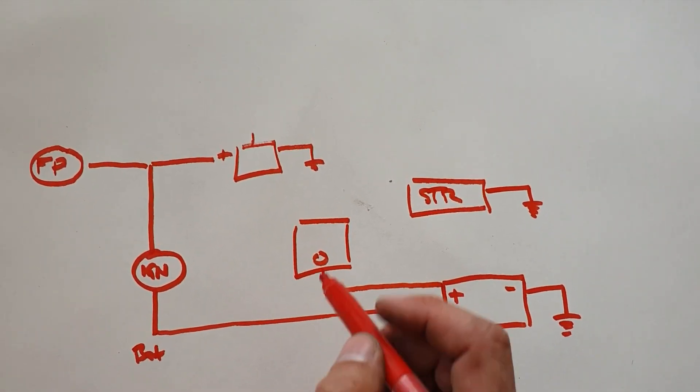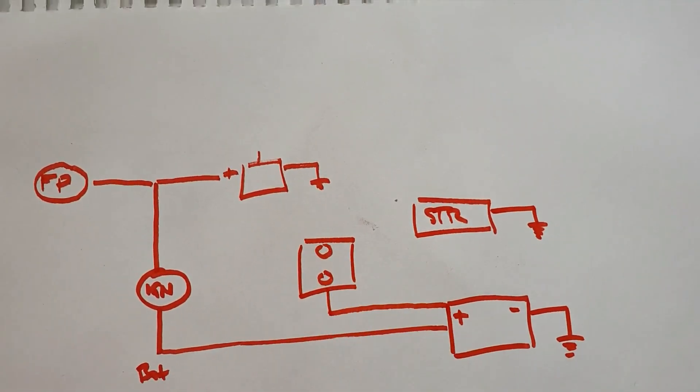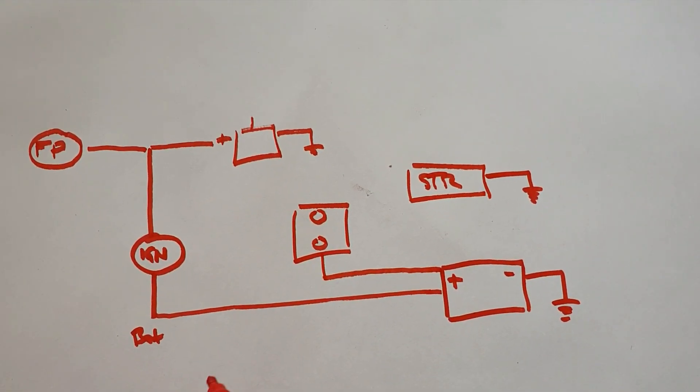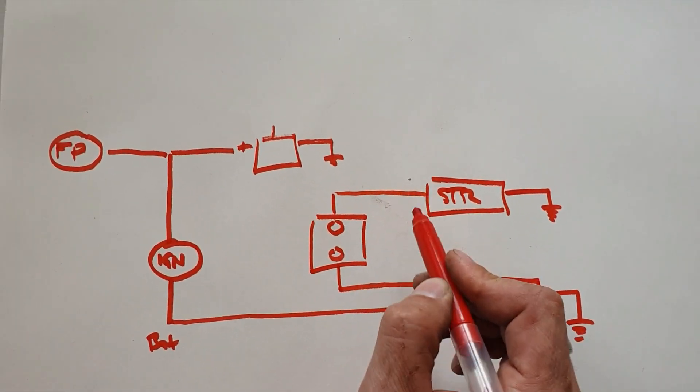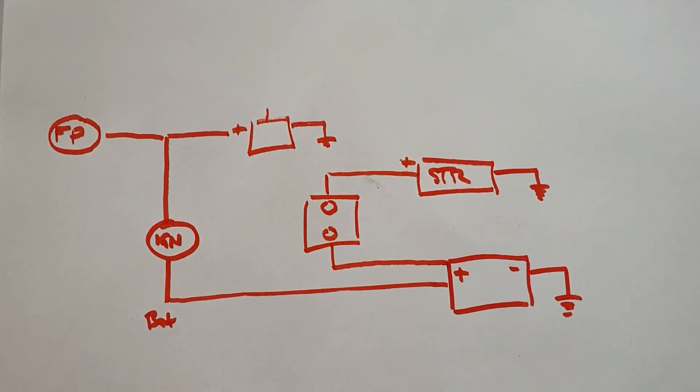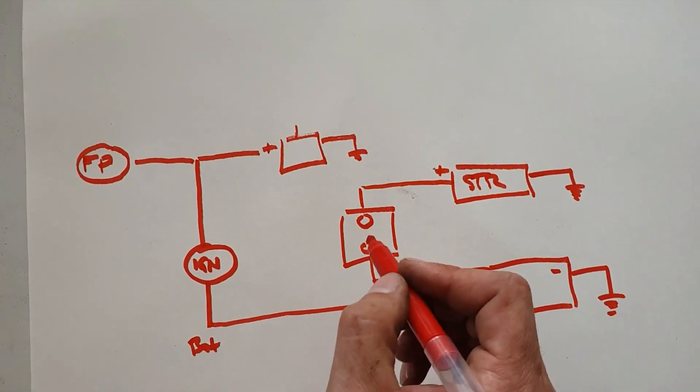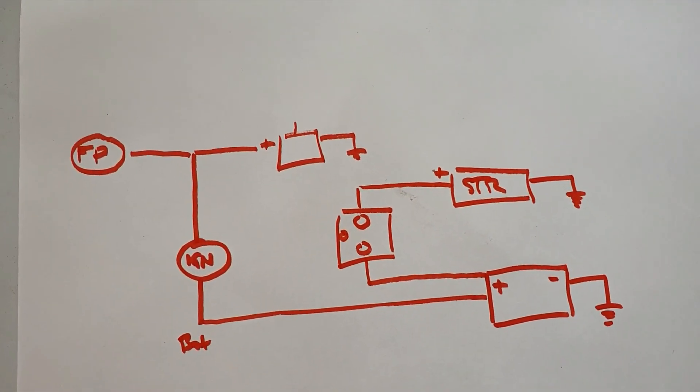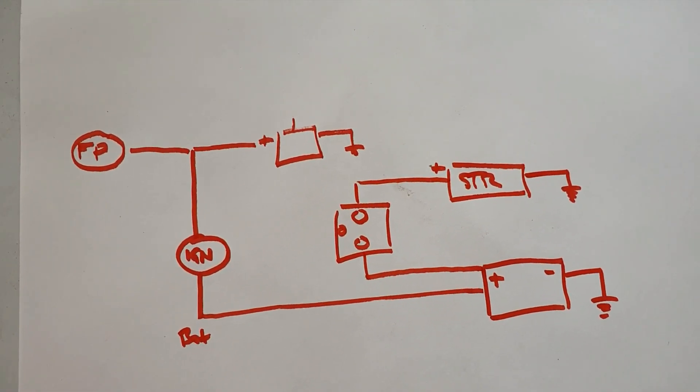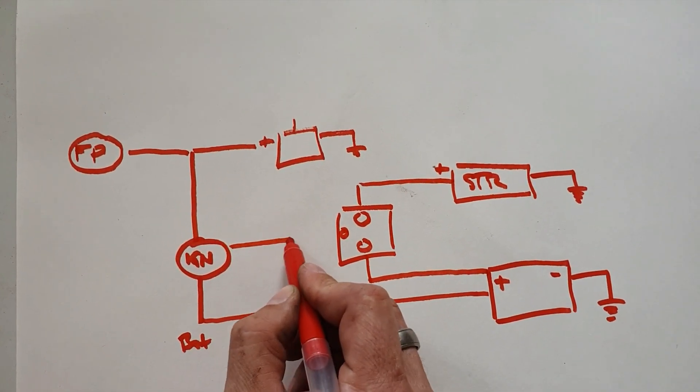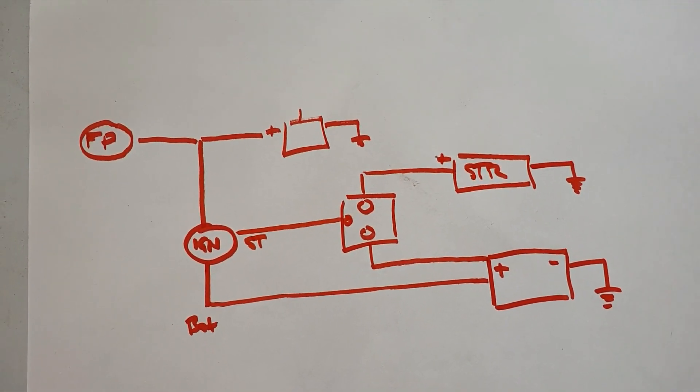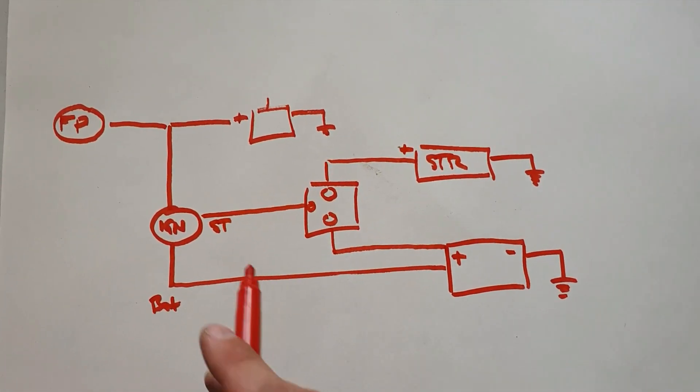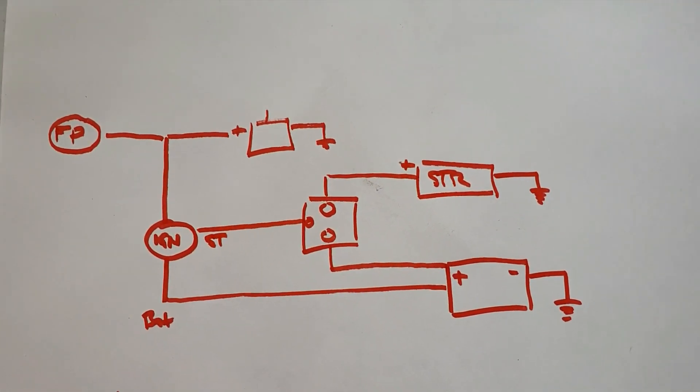And out of the switched side of the relay there is going to be again another zero gauge cable running to the positive side of the starter there. And then from the switch within the relay, which is the starter section of my ignition switch, we are going to have a cable running through there.